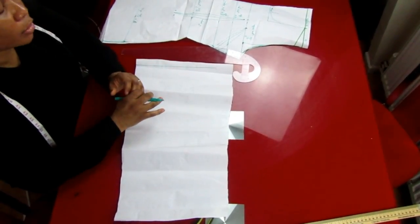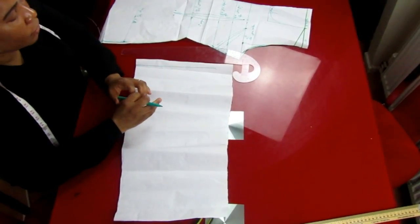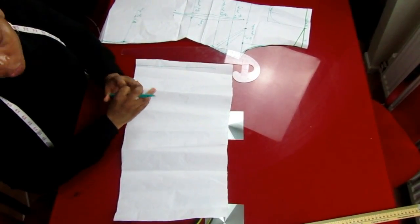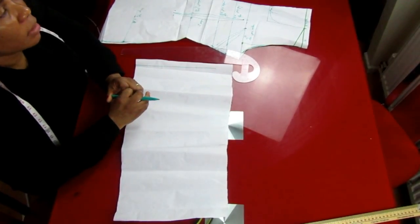Next is to divide your bust measurement by 12. Always divide your bust measurement by 12. So the bust measurement I'm going to be working with is 42 inches. You divide it by 12, which is 3.5 inches.